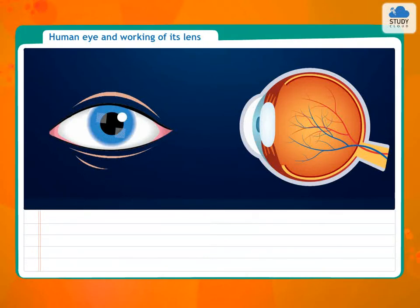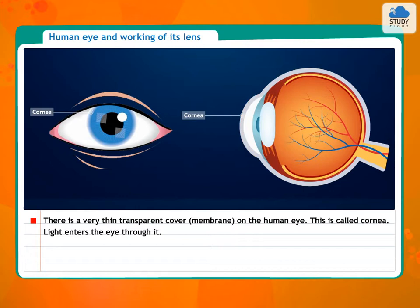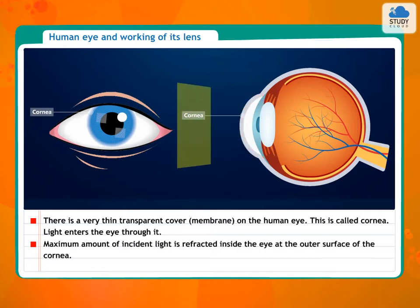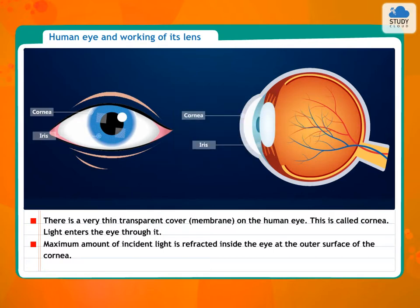Human eye and working of its lens. There is a very thin transparent cover, called a membrane, on the human eye. This is called the cornea. Light enters the eye through it. The maximum amount of incident light is refracted inside the eye at the outer surface of the cornea.